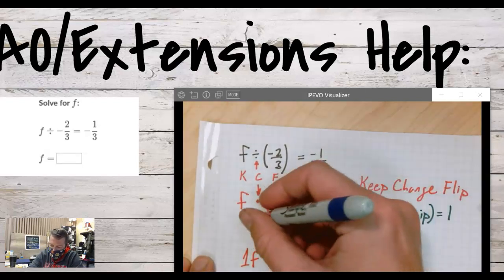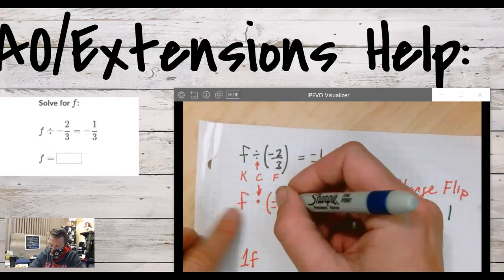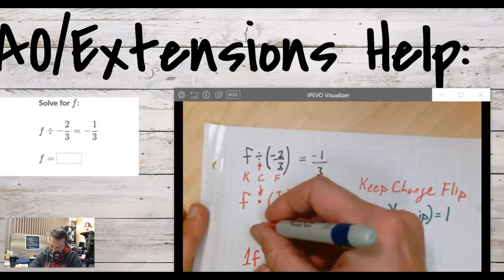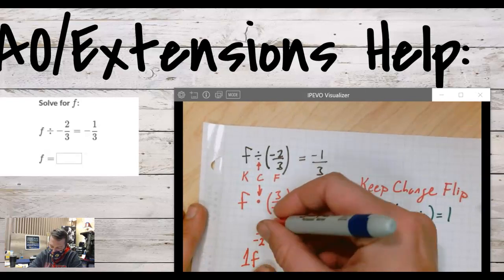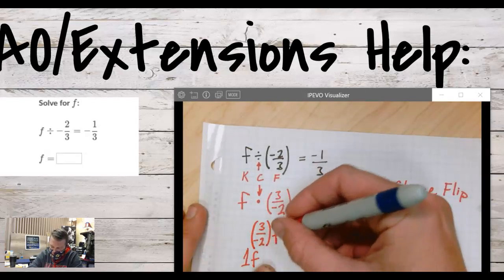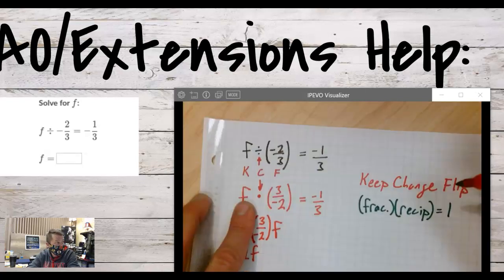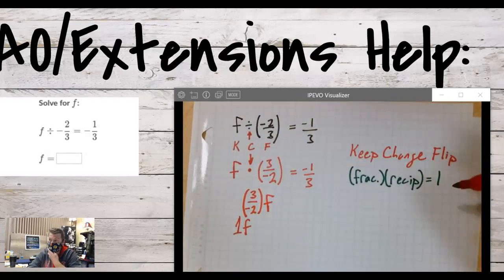Right now, what we have, if I turn the multiplication order around, is actually three halves, like negative three halves times f, right? Because these are multiplied, and order of multiplication can be switched.